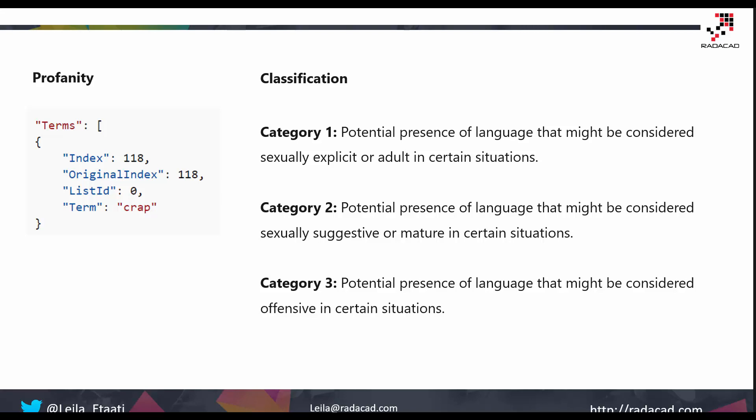Each category returns a score between zero and one that indicates the predicted category for that text — for example, how much the term belongs to category one, category two, or category three.